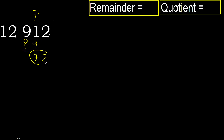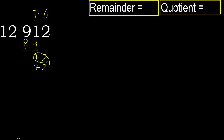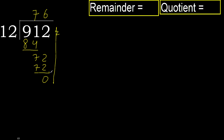Next, bring down: 72. 12 multiplied by 6 is 72, which is not greater. Subtract: 72 minus 72 equals 0. There is no next number, therefore finish.